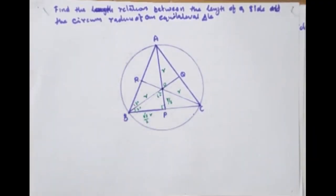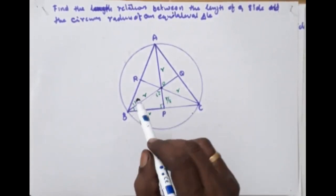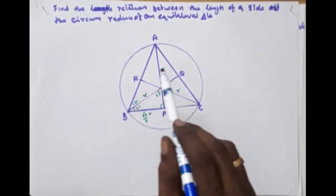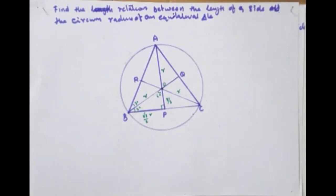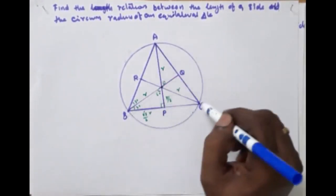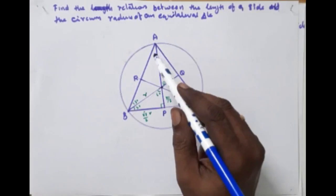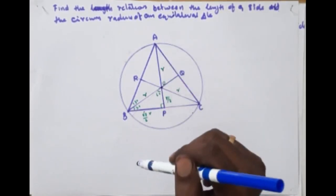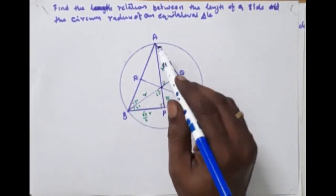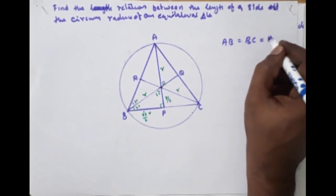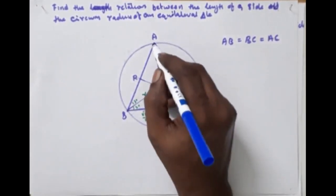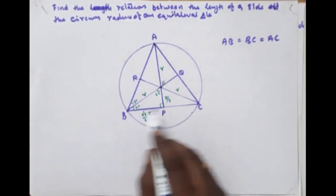Now, the relationship between the length of a side and the circumradius of an equilateral triangle. The side of the triangle is the same way — we will label the vertices A, B, C. With the circumcenter O positioned around the triangle on top of the triangle.